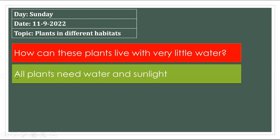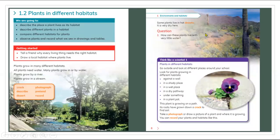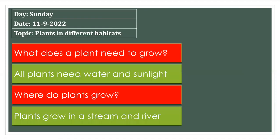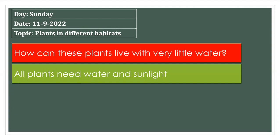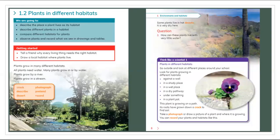There is another question: how can these plants live with very little water? Look at the picture on the screen — there is not too much water for plants. These plants grow with very little water because rain is the only source of water for them.